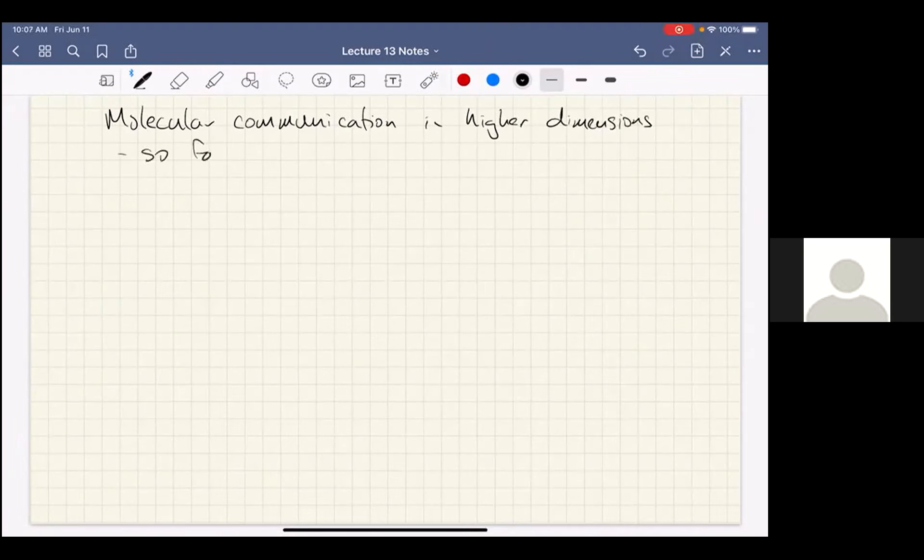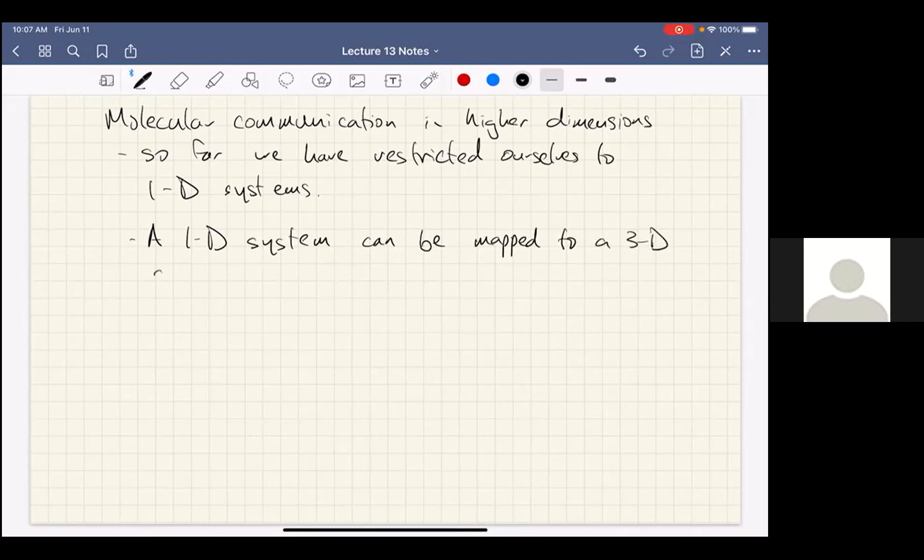So far, we have restricted ourselves to 1D systems. And this is done for convenience and because they are easy to analyze. I would like to point out that a 1D system can be mapped to a 3D system as follows. Define the x direction as the original 1D axis of propagation.